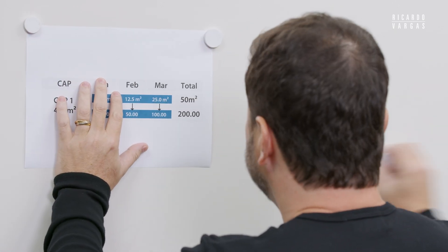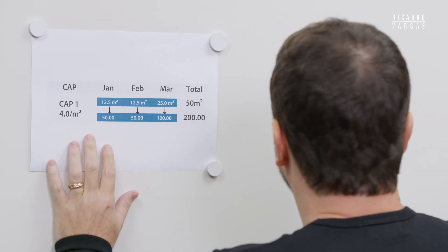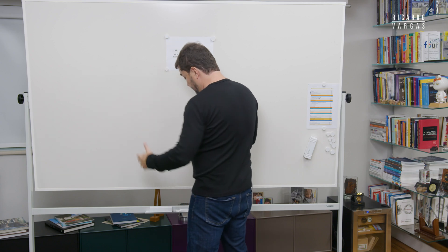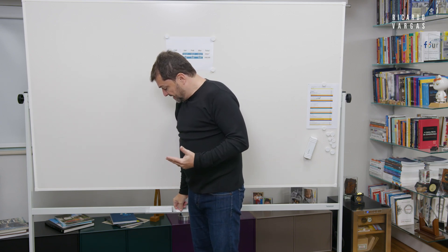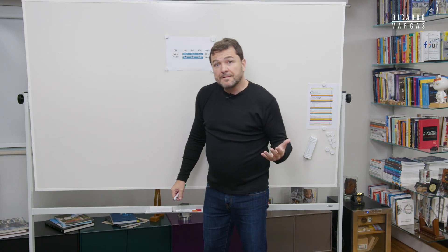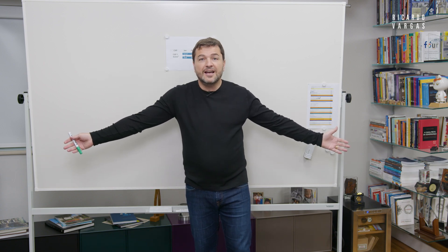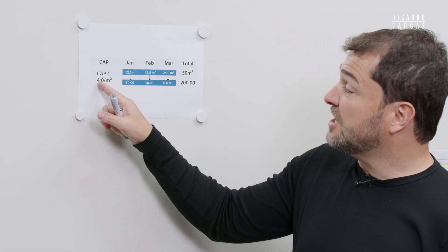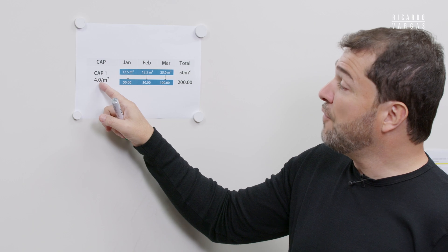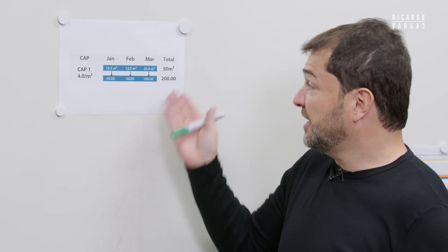Let me give you this example. Let's suppose that your CAP is to build a floor — the floor of this room here. This room has 50 square meters, and you know that it costs $4 per square meter. So the cost is $200, the same cost as the others.